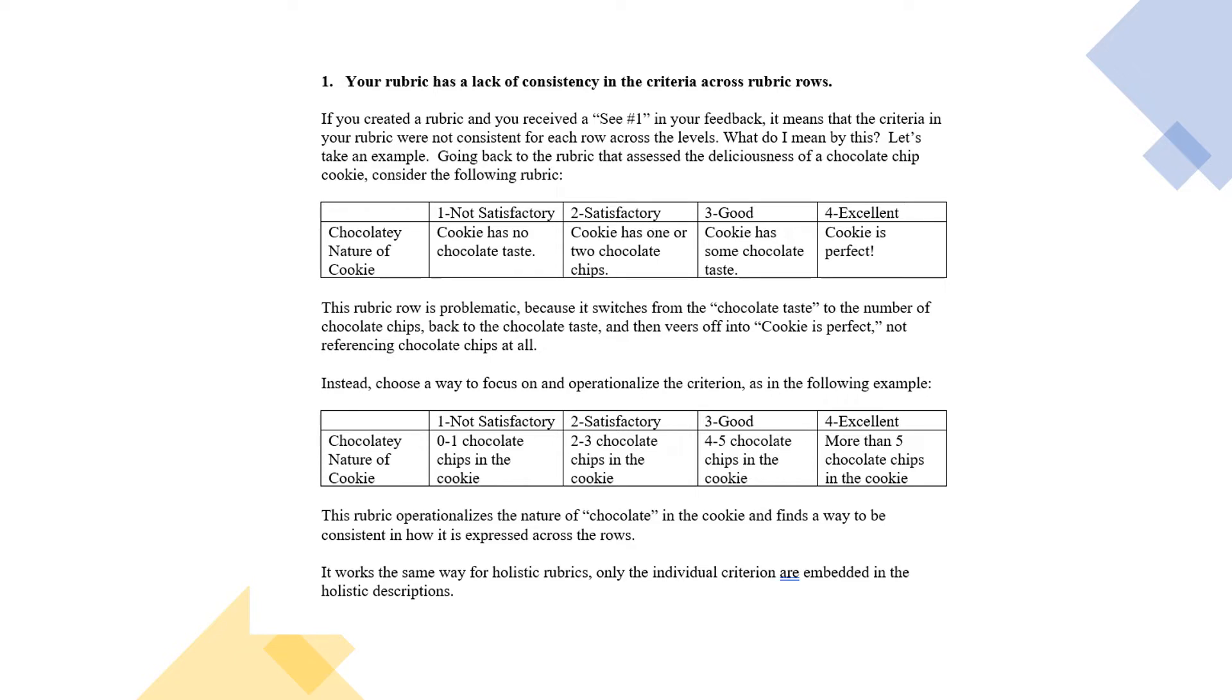If I reference error number one, it means your rubric has a lack of consistency in the criteria across rubric rows. Criteria are the rows. So in the example you see, we talk about the chocolate chip cookie. I've given you a criterion of chocolatey nature of the cookie. That's the criterion.